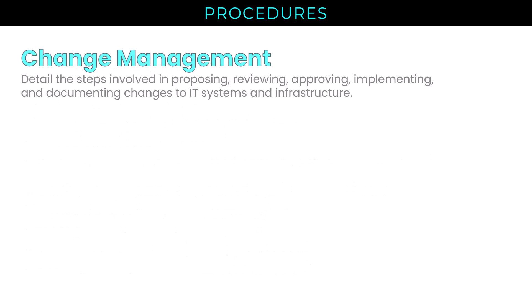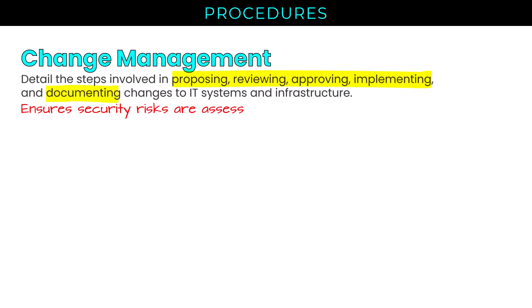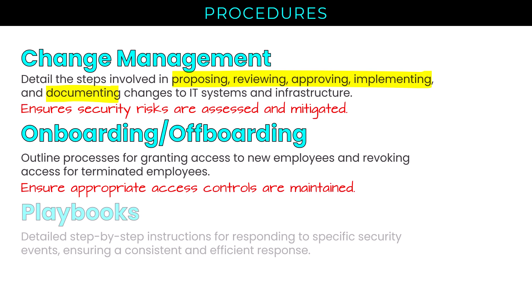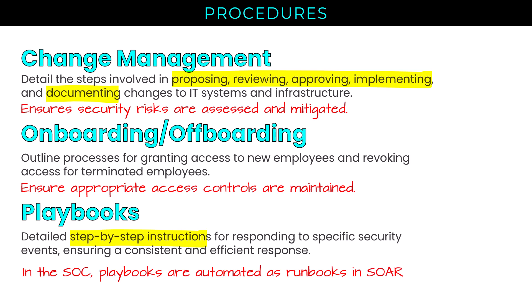There were some procedures called out in the syllabus. Change management procedures detail the steps involved in proposing, reviewing, approving, implementing, and documenting changes to IT systems and infrastructure to ensure security risks are assessed and mitigated along the way. Onboarding and offboarding procedures outline processes for granting access to new employees and revoking access for terminated employees, ensuring appropriate access controls are maintained throughout the user lifecycle. Playbooks are detailed step-by-step instructions for responding to specific security events. In the Security Operations Center, playbooks are automated as runbooks in SOAR — Security Orchestration Automation and Response.